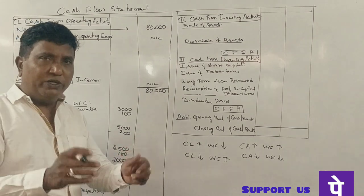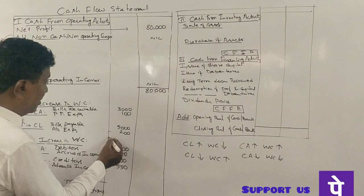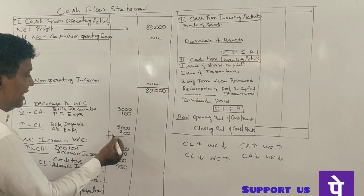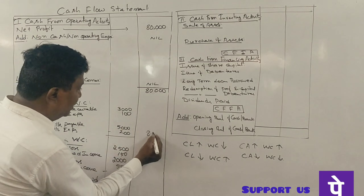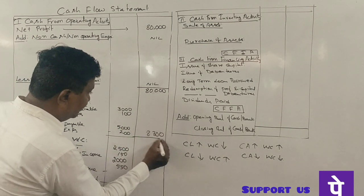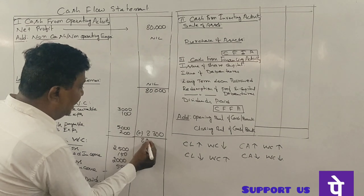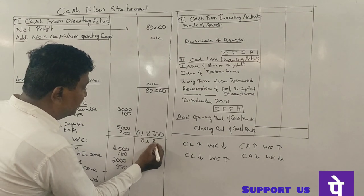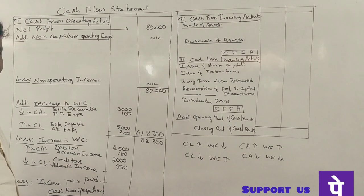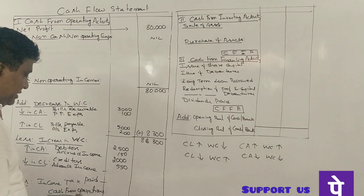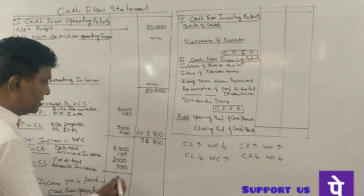Now adding all the adjustments: the total decrease in working capital is 8,300 rupees. Decrease in working capital equals the total of all these adjustments — 8,300 rupees. So cash from operating activity is 8,300 rupees — this is the answer for the 6-mark question.